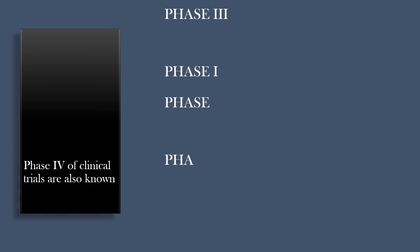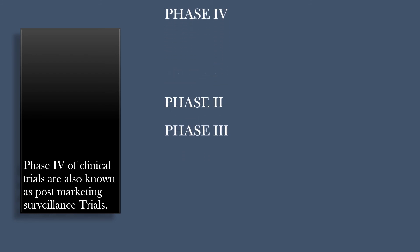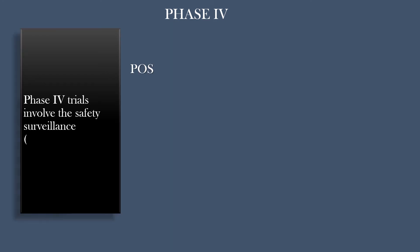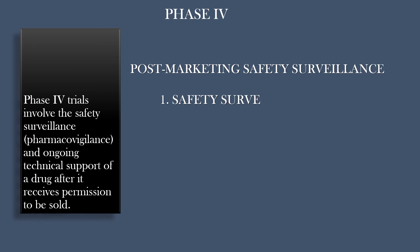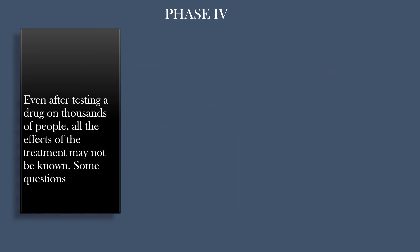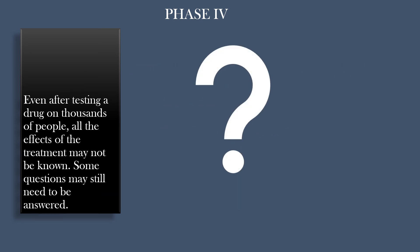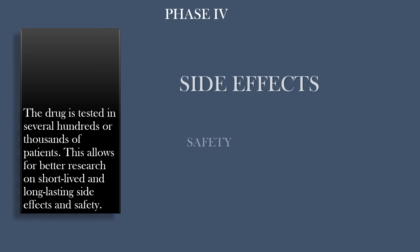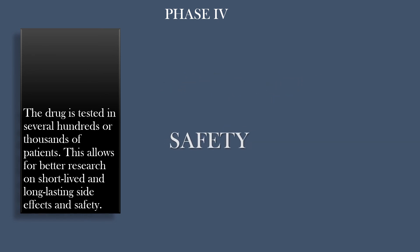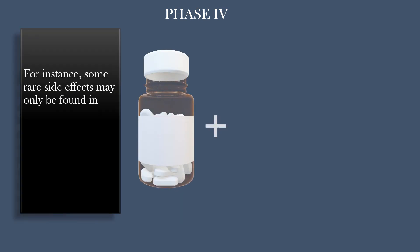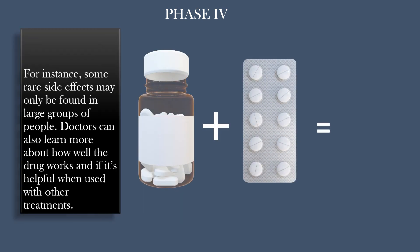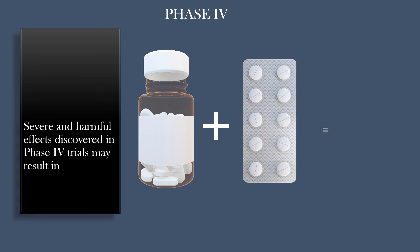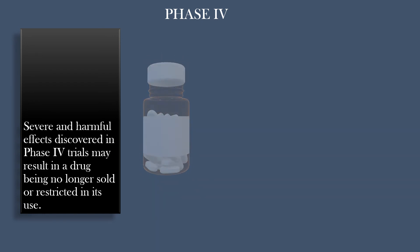Phase 4 of clinical trials are also known as post-marketing surveillance trials. Phase 4 trials involve the safety surveillance, pharmacovigilance, and ongoing technical support of a drug after it receives permission to be sold. Even after testing a drug on thousands of people, all the effects of the treatment may not be known. The drug is tested in several hundreds or thousands of additional patients, allowing for better research on short-lived and long-lasting side effects and safety. Some rare side effects may only be found in large groups of people. Doctors can also learn more about how well the drug works and if it's helpful when used with other treatments. Severe and harmful effects discovered in Phase 4 trials may result in a drug being no longer sold or restricted in its use.